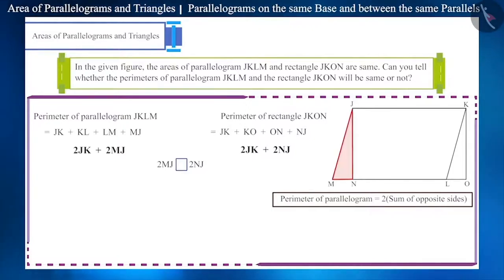We can see that in triangle JNM, JNM is a right-angled triangle where the side opposite angle JNM is hypotenuse JM. And we know that the hypotenuse is always greater than other sides. Therefore, we can say that side JM will be greater than JN, or let's say MJ is greater than NJ.